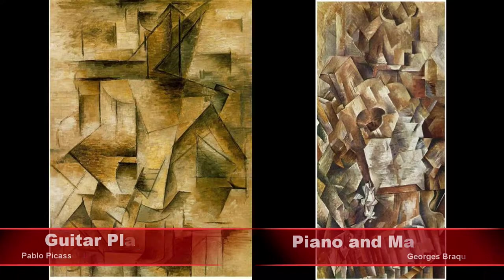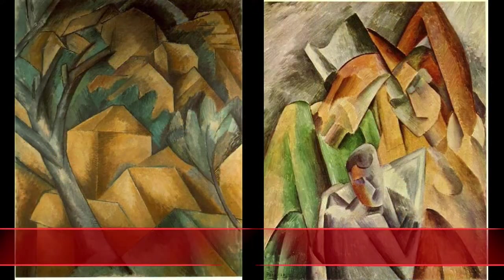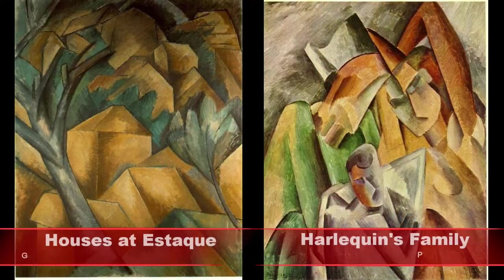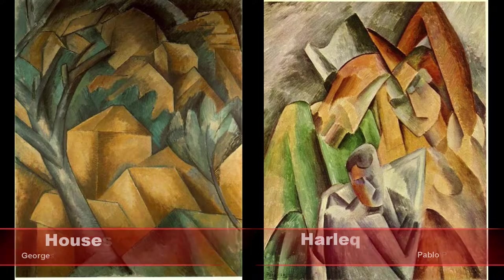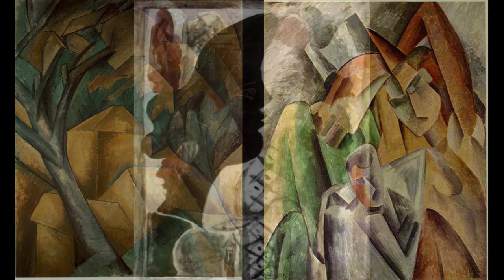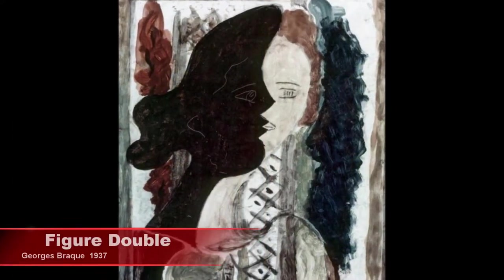Once he simplified the object, he would break it apart into sections so that he could consider each part of the object separately. One thing he was really interested in was being able to show the object from different perspectives at the same time.